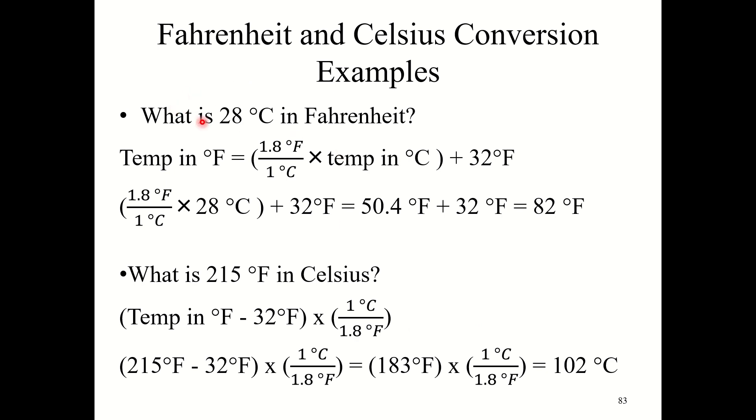So let's say I asked what is 28 degrees Celsius and Fahrenheit. So the temp and Fahrenheit equals 1.8 over 1 times temp in Celsius plus 32. So I take 28 degrees Celsius and I multiply it by 1.8, which gives me 50.4. Then I add 32 and this gives 82. So 28 degrees Celsius is approximately 82 degrees Fahrenheit. If I'm doing the reverse, converting from degrees Fahrenheit to Celsius, I first subtract and then I multiply. So I would take 215 degrees Fahrenheit minus 32, which gives me 183. Then I would multiply by 1 over 1.8. So essentially divide by 1.8. This gives 102 degrees Celsius. So 215 degrees Fahrenheit equals 102 degrees Celsius.